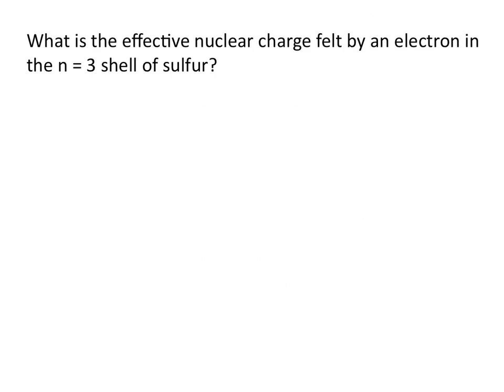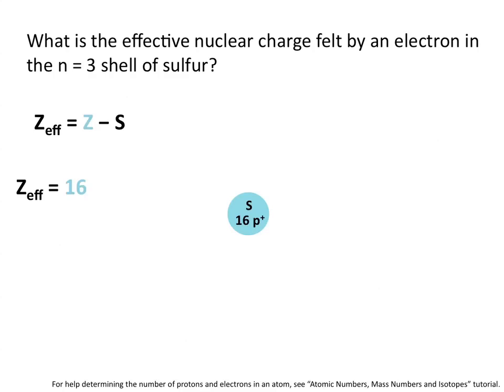Let's look at an example. What is the effective nuclear charge felt by an electron in the n equals 3 shell of sulfur? The effective charge is equal to the number of protons in the nucleus minus the number of inner shell electrons. The atomic number of sulfur is 16, and that means sulfur has 16 protons in the nucleus.